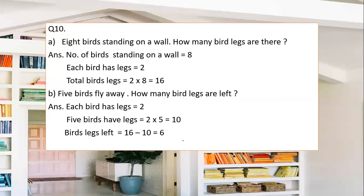Question number 10: eight birds are standing on a wall — how many bird legs are there? There are 8 birds, and each bird has 2 legs. So you simply multiply 2 × 8 = 16 bird legs in total.